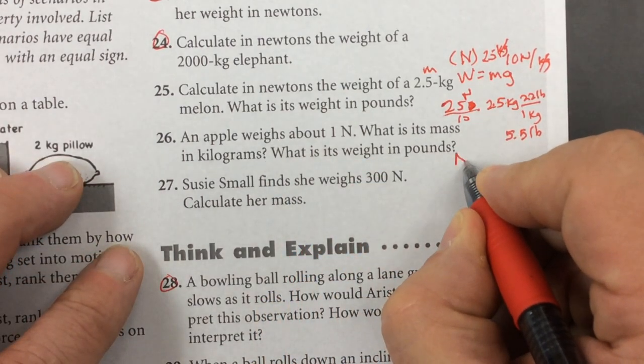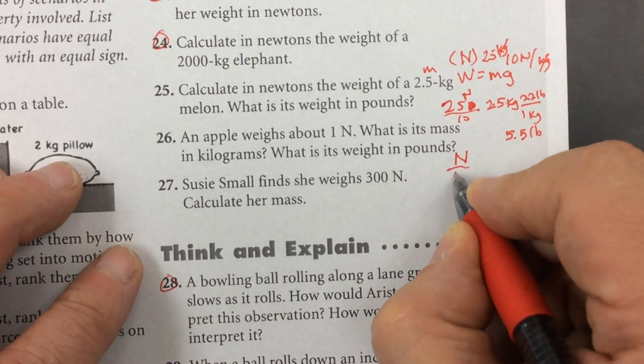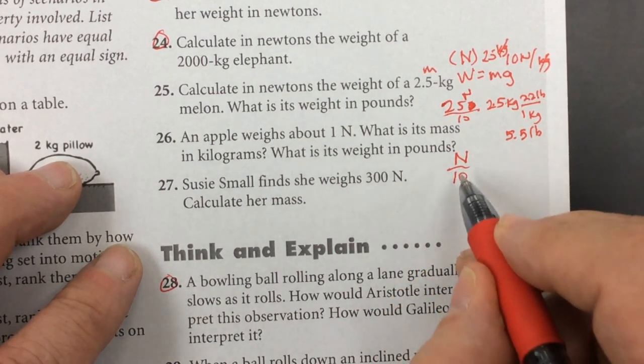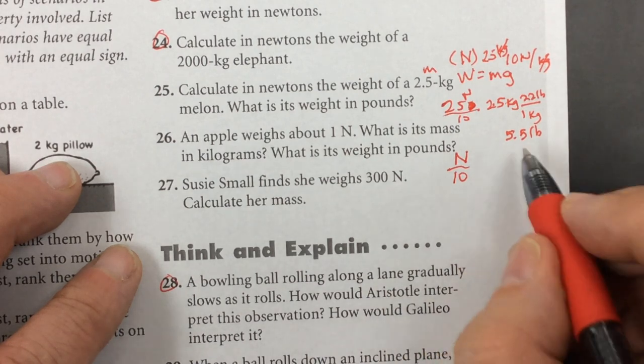So a newton divided by 9.8 or 10, which we'll just round to 10, will give you kilograms.